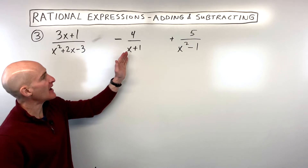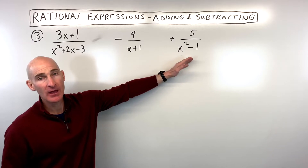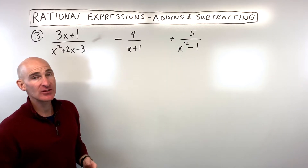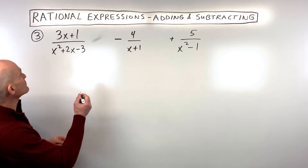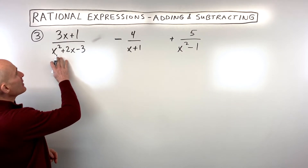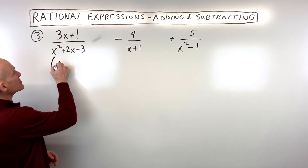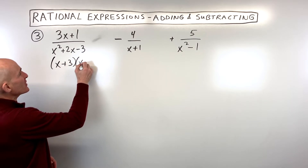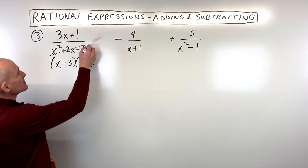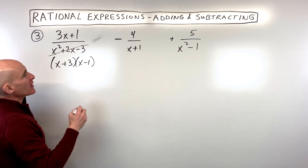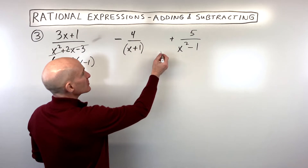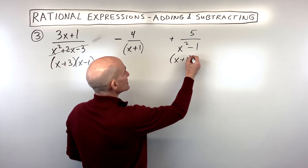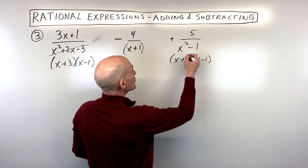This one's challenging because it has three fractions. We want to get a common denominator for all three — see if you can do this one on your own; it's a good practice problem. Remember to start by factoring the denominators as much as you can. So that's the first one factored. This one looks like it's already factored. And then this one is a difference of two squares, so that's going to be x plus 1, x minus 1.